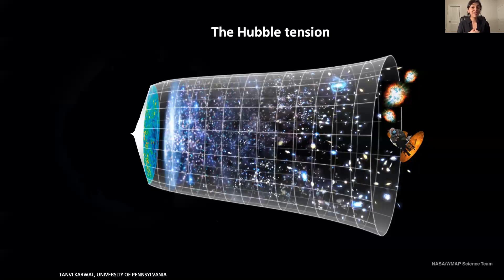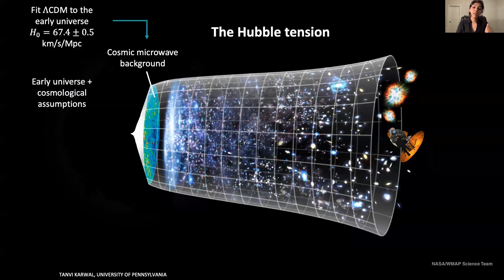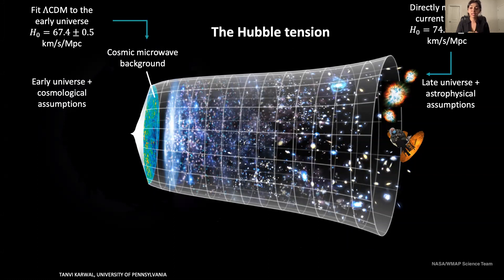Because this is a conference dedicated to the Hubble tension, I'm not going to spend too long motivating it. I'll just state the most often quoted tension in the two measurements. The Hubble tension is a discrepancy between two different methods of determining the current expansion rate of the universe: one relying on an indirect estimate from the early universe using a cosmological model, and another, a direct measurement in the late universe relying on astrophysical modeling. These two are now at a 4.4 sigma tension, and this anomaly has only grown — an anomaly we lovingly call the Hubble tension.